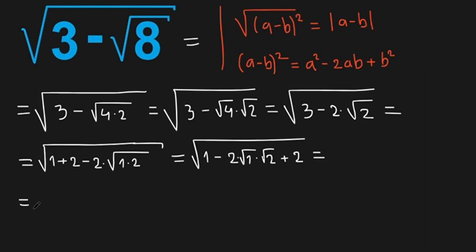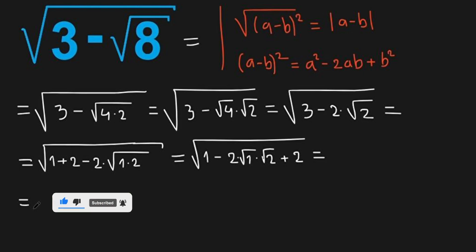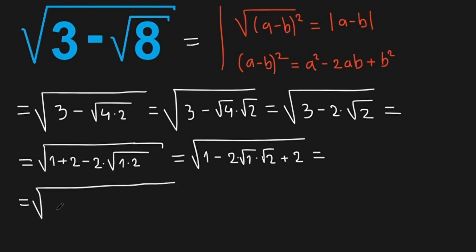Before we continue solving, if you are enjoying this video please subscribe to my channel because I'm new on YouTube and I need your support. So let's get back. We have square root of 1, which can be written as square root of 1 squared, minus 2 times square root of 1 times square root of 2, plus 2, which can be written as square root of 2 squared.